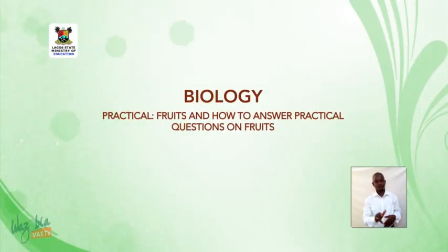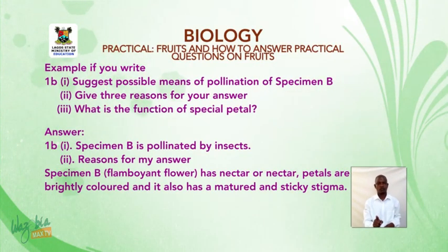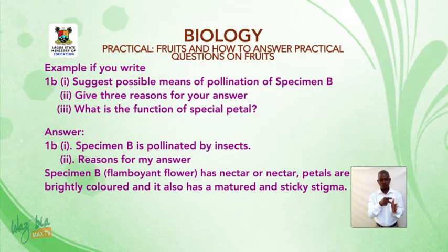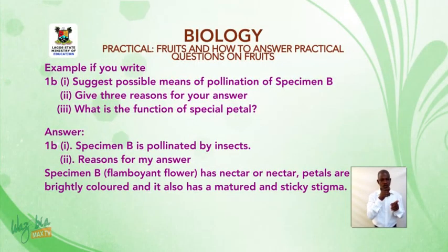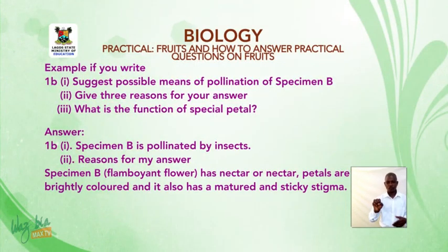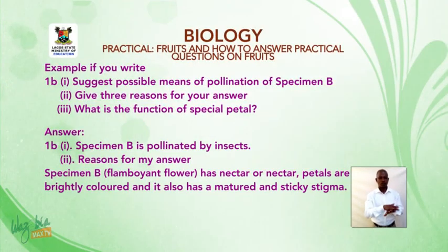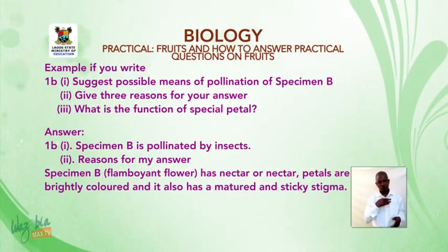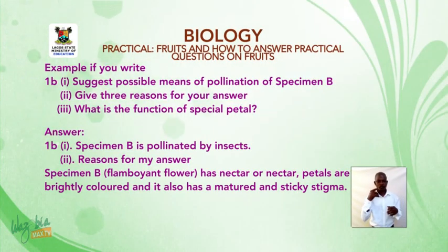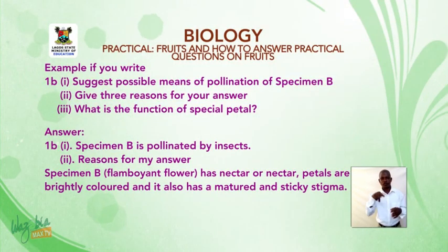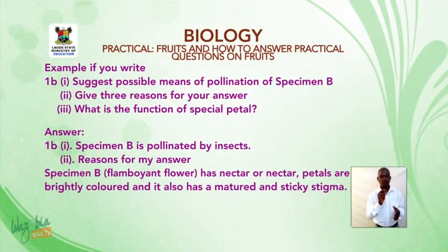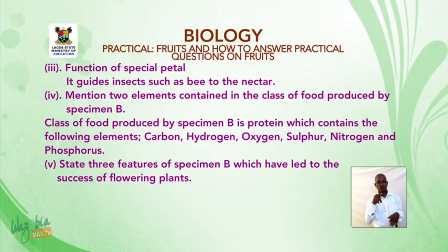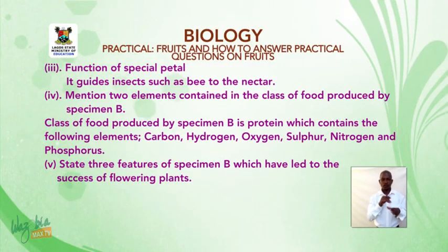Welcome back. Question 1B1: Suggest possible means of pollination of specimen B (flamboyant flower) and give three reasons for your answer. What is the function of the special petal? Answer: Specimen B is pollinated by insects. Reasons: Specimen B has nectar, petals are brightly colored, and it has a mature sticky stigma. The function of the special petal is to guide insects such as bees to the nectar.